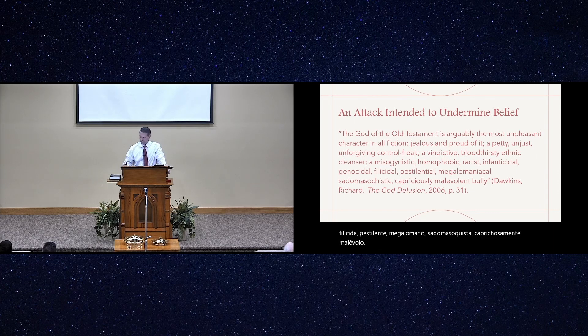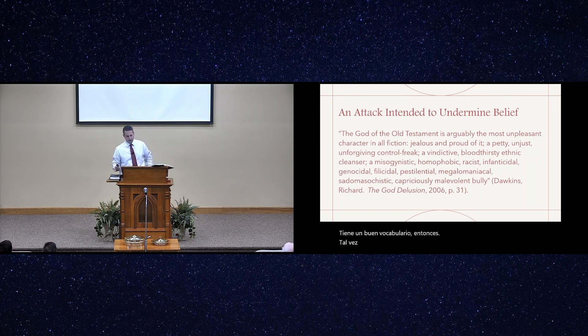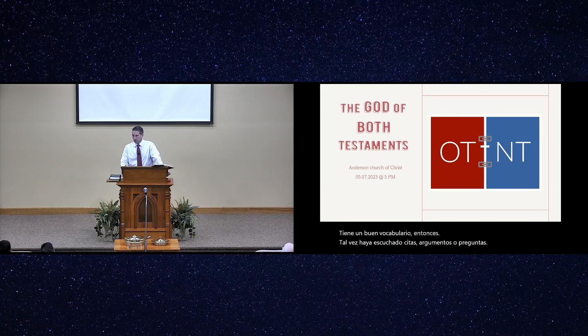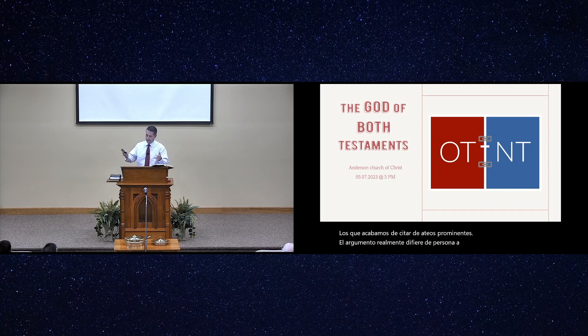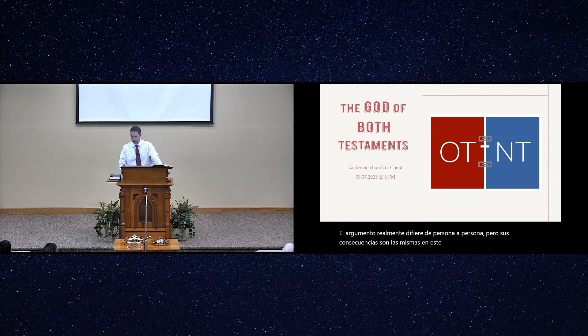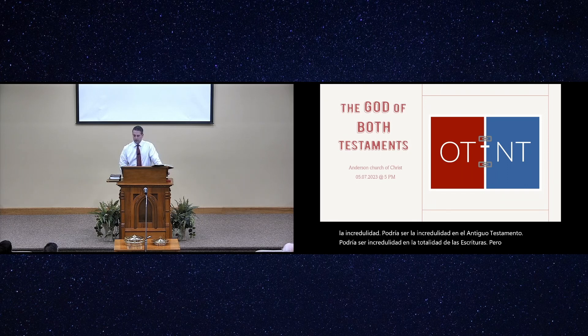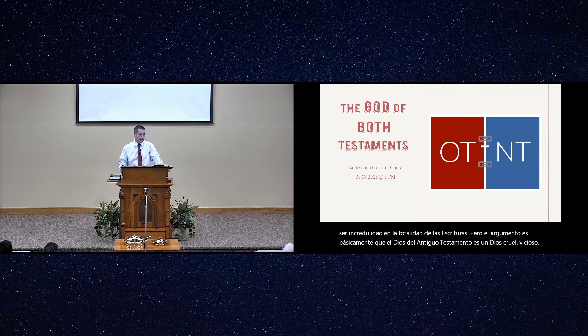And then we have another quote from Richard Dawkins in his book, The God Delusion, which was written in 2006. The God of the Old Testament is arguably the most unpleasant character in all fiction, jealous and proud of it, a petty, unjust, unforgiving control freak, a vindictive, bloodthirsty ethnic cleanser, a misogynistic, homophobic, racist, infanticidal, genocidal, filicidal, pestilential, megalomaniacal, sadomasochistic, capriciously malevolent bully. Well, he's got a good vocabulary.